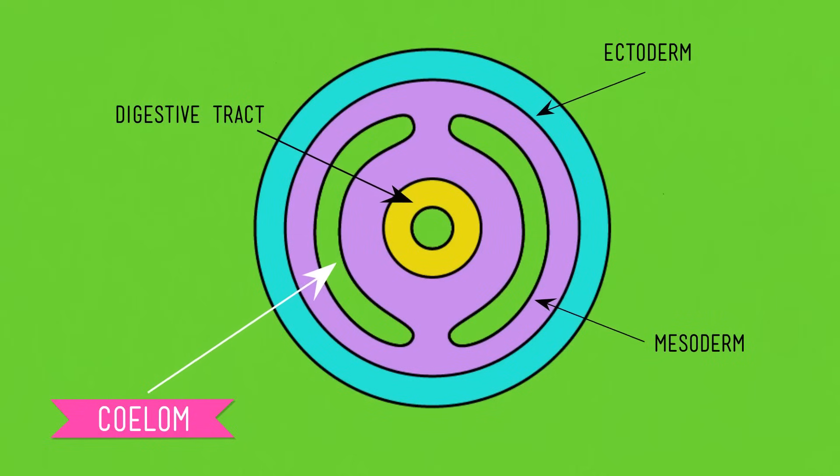Platyhelminthes themselves are pretty simple, but a couple of phyla up the ranks, this new layer allows animals to form true organ systems: the ectoderm forming the brain, nervous system, and skin; the mesoderm forming muscles, bones, cartilage, the heart, blood, and other very useful stuff; and the endoderm forming the digestive and respiratory systems. This complexity is made possible by one of the mesoderm's key features — the coelom — a fluid-filled cavity that stores and protects the major organs, allowing internal organs to move independent of the body wall.